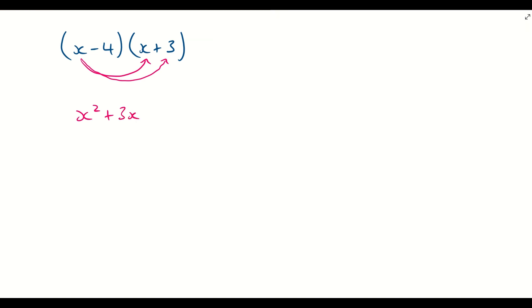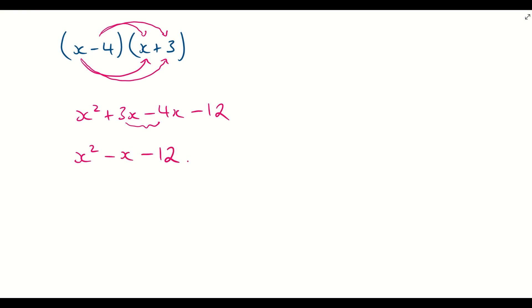Then we do minus 4 times x, giving us minus 4x, and minus 4 times 3, giving us minus 12. We can simplify by grouping the x terms: x² + (3 − 4)x − 12, which gives us x² − x − 12. That's the final answer for the expansion of these brackets.